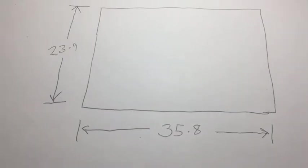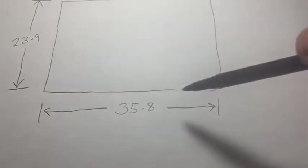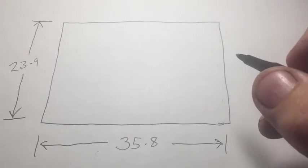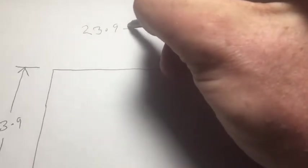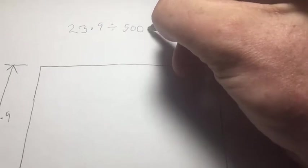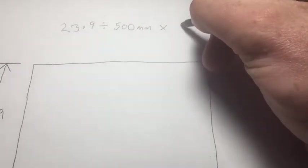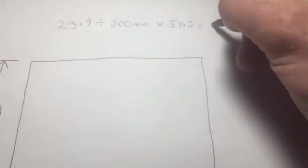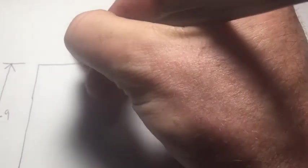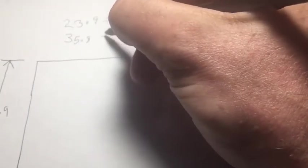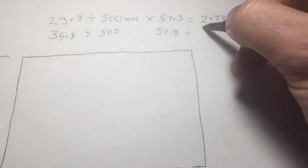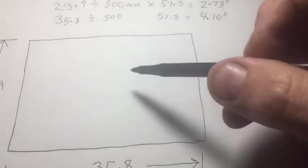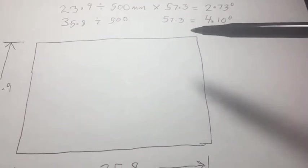We're going to use the Canon 6D again as a reference: 23.9 millimeters by 35.8, and we're going to assume a 500 millimeter objective lens. So I take 23.9 divided by 500 — and that's in millimeters — multiply that by 57.3, and I get 2.73 degrees. And I take my other dimension of my sensor, 35.8, divide that by 500, multiply that answer by 57.3, and I get 4.10 degrees. So my field of view is 4.10 by 2.73 degrees.